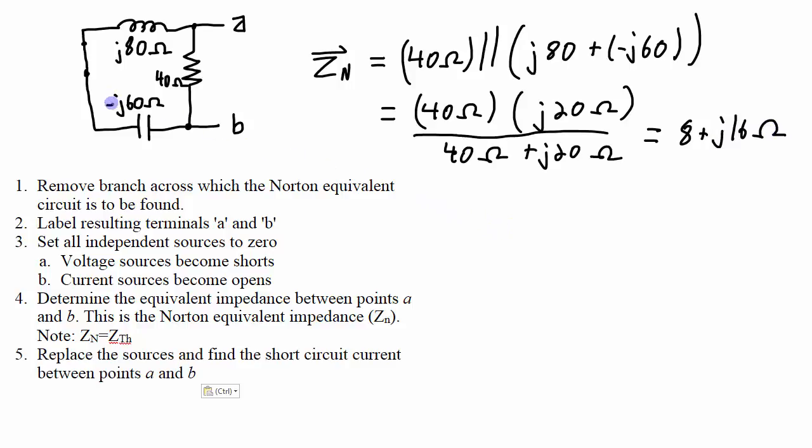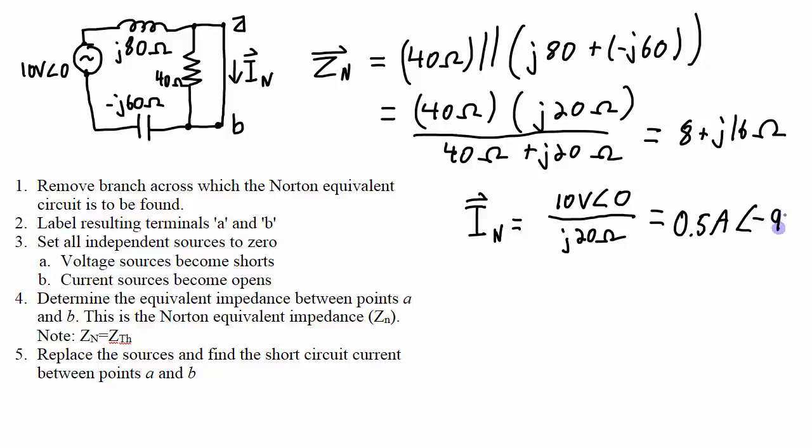Step number five is to replace the sources and find the short circuit current between points A and B. So I need to short those two points. Well shorting A and B actually shorts out the 40 ohm resistance. So that current, which is the Norton equivalent current, is going to be equal to 10 volts with a phase angle of zero divided by this J80 ohms in series with this minus J60 ohm capacitor, so over a total of J20 ohms. And that works out to 0.5 amps with a phase angle of minus 90 degrees.